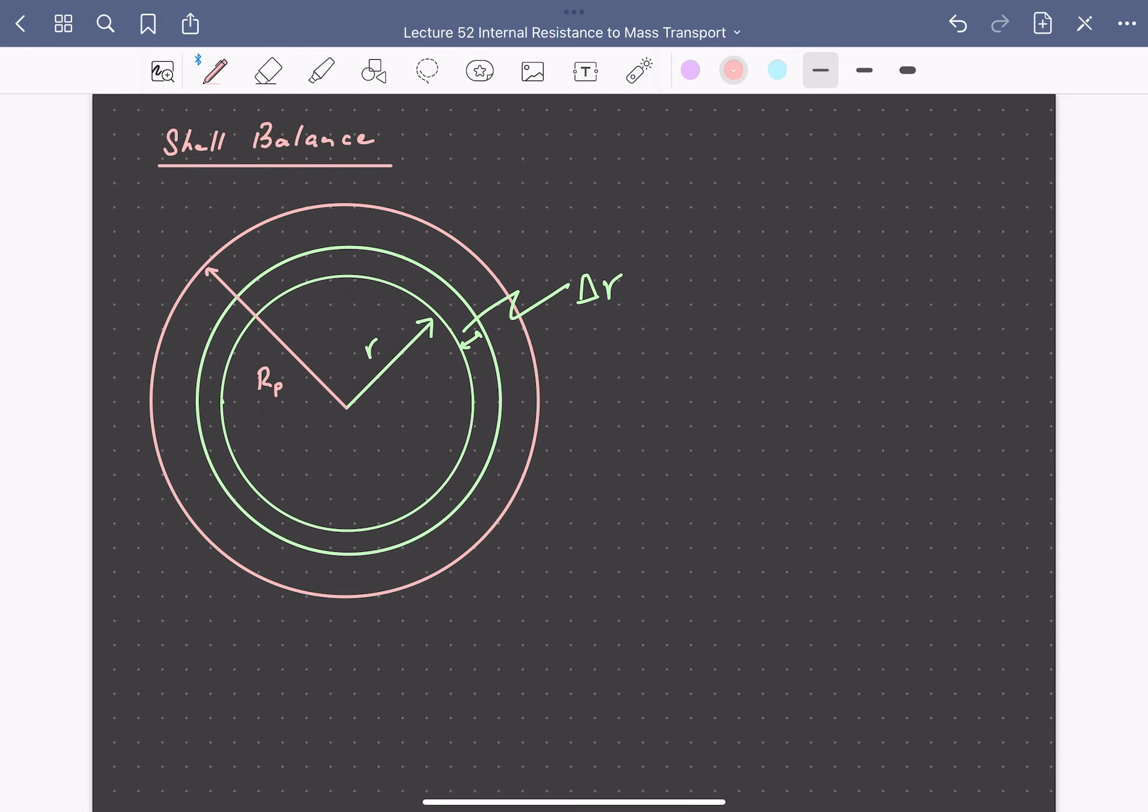So let's consider our spherical particle and perform a shell balance for a molecule A that undergoes a first order reaction A goes to B. So within this differential shell of thickness delta R, we can write a mole balance on A. So we can say that the rate of A entering this shell by diffusion minus the rate of A leaving the shell by diffusion plus the rate of generation of A within that shell by reaction is equal to zero at steady state.